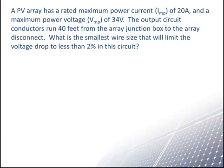The first thing that we need to do is determine the allowable voltage drop. Multiply 34 volts by 2% for an allowable drop of 0.68 volts.